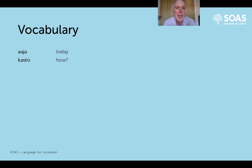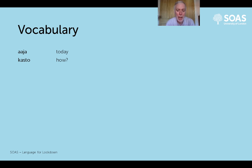The second is the first of our questioning words. Many of Nepali's questioning words begin with a 'ka', so 'kosto' means 'how', asking for something to be described.